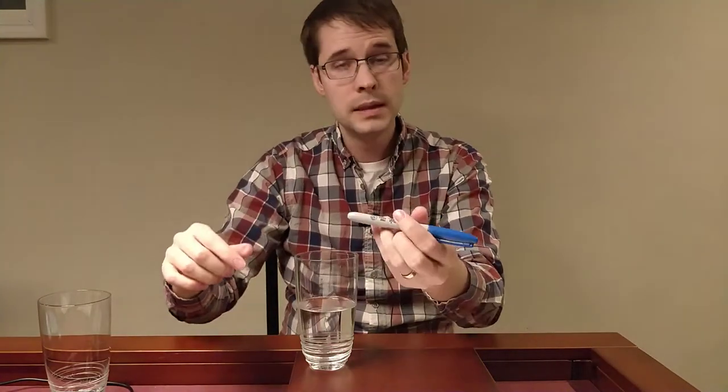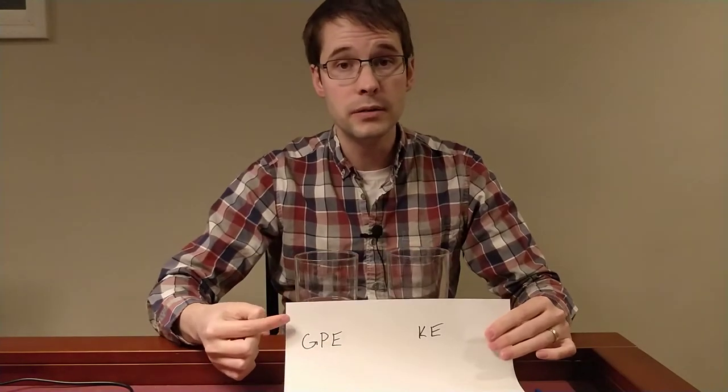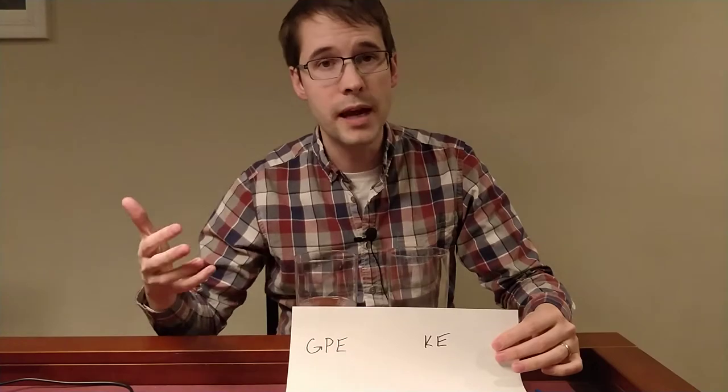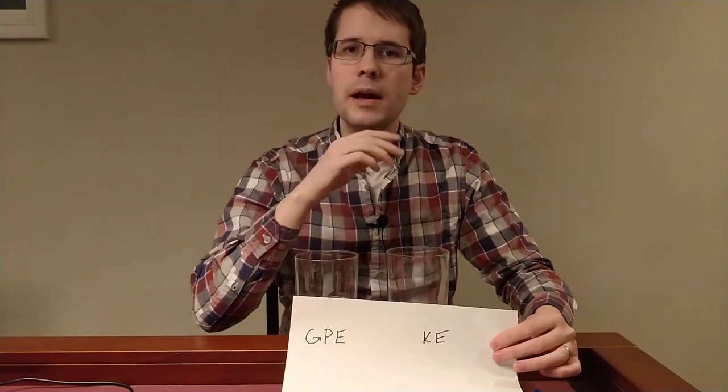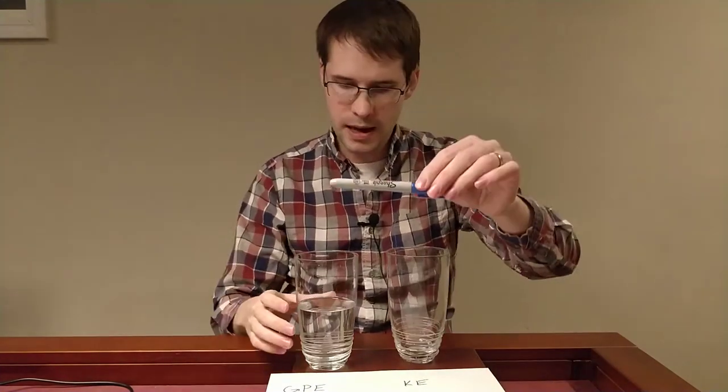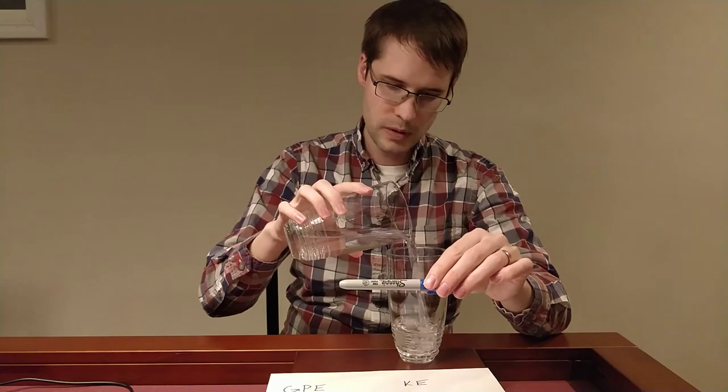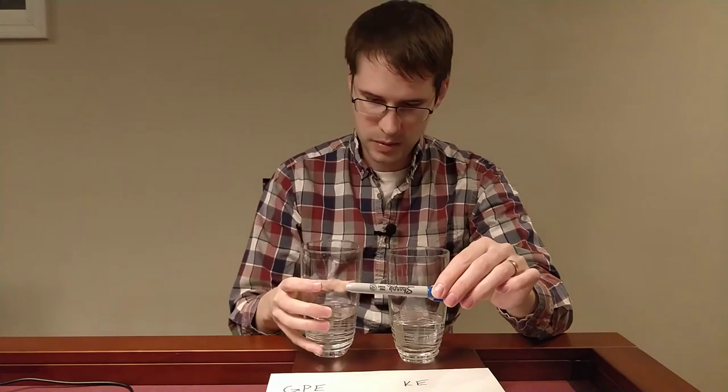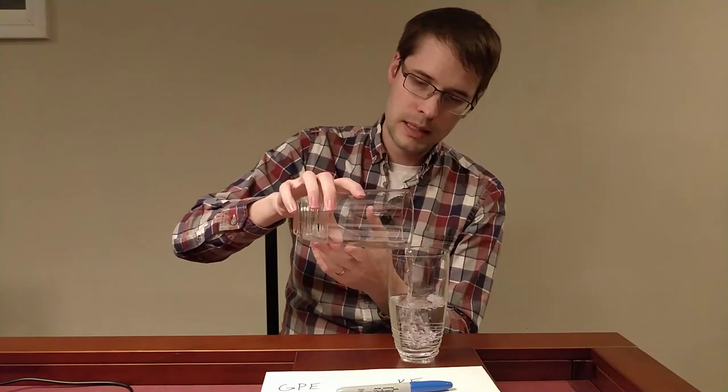We're going to think of this as our gravitational potential energy. At the beginning, the marker starts up here and falls downwards to a lower height. As it falls, the energy is converting from gravitational potential energy into kinetic energy. If this cup represents gravitational potential energy at the beginning, all the energy is gravitational potential energy. At the end, we're trying to get it to change into kinetic energy. Halfway down, some energy is in gravitational potential and some is in kinetic energy. As it continues to fall, gravitational potential energy keeps converting into kinetic energy.